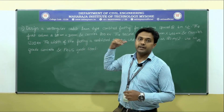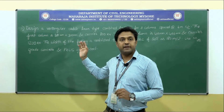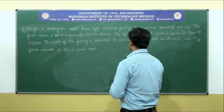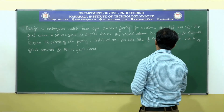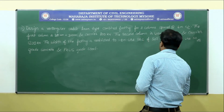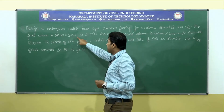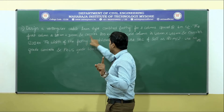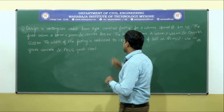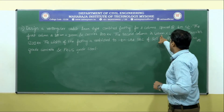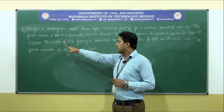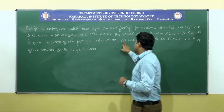Now I will directly take up a design problem. Design a rectangular slab and beam type combined footing for two columns spaced at 4 meter center to center. The first column is 300 mm × 300 mm — a square column — and carries 800 kN load. The second column is 400 mm × 400 mm and carries 1200 kN. The width of the footing is restricted to 1.8 meter.